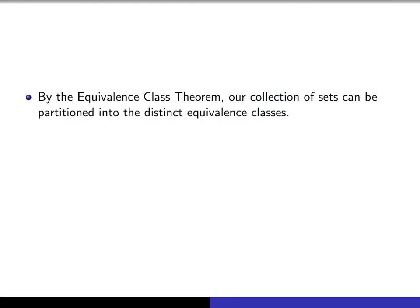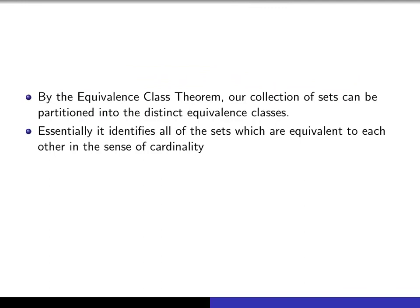So it follows that by the equivalence class theorem, the given collection of sets that you started with, no matter how big it is, can be partitioned into distinct equivalence classes. Basically what's happening is you're taking all of the sets in your collection and you're identifying the ones that have the same cardinality.